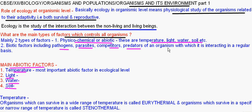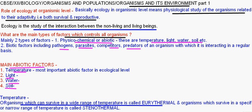Depending on the temperature range they can tolerate, living beings are divided into mainly two types: eurythermal and stenothermal. Eurythermal organisms can survive in a wide range of temperatures, whereas stenothermal living beings can survive only in a narrow range of temperature.